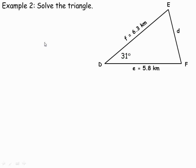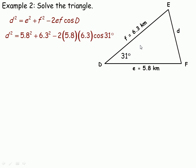The last example says to solve the triangle, which means find all unknown sides and angles. We have side F, side E, and the angle between them, so we use the cosine law to find side D. We write: D squared equals E squared plus F squared minus 2EF cos D, where D is the angle opposite side D. E is 5.8 and F is 6.3, and angle D is 31 degrees.